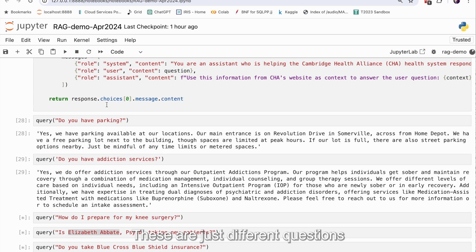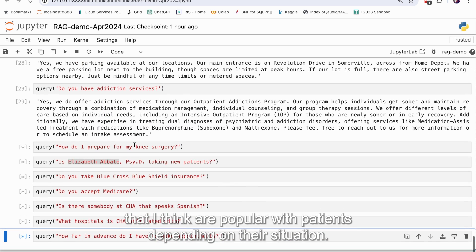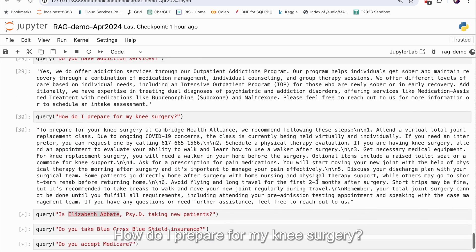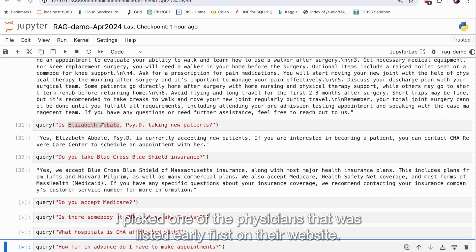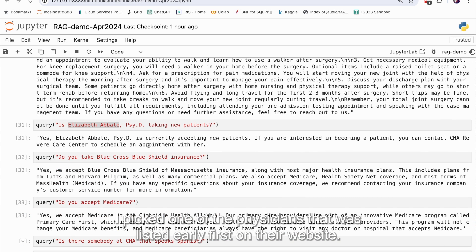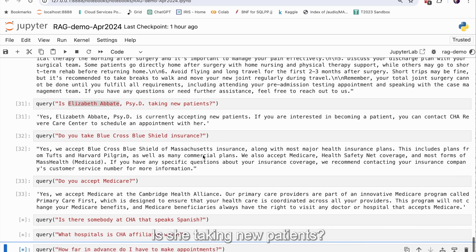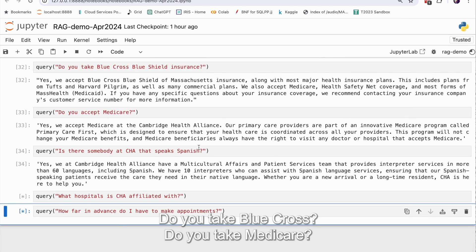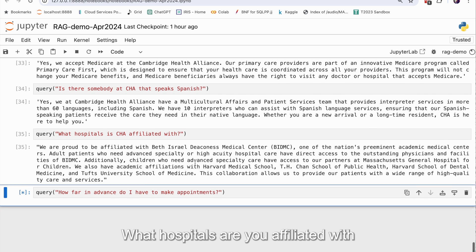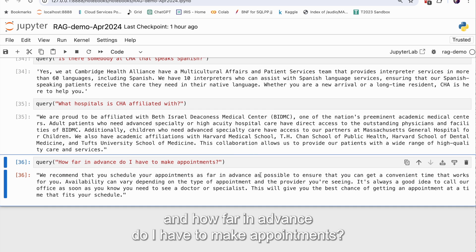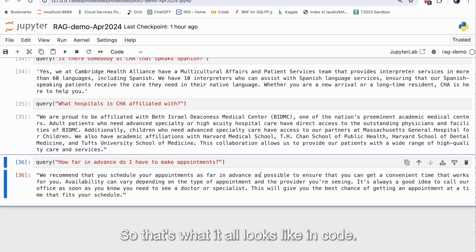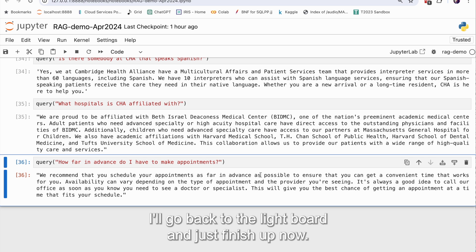These are just different questions that I think are popular with patients depending on their situation. Do you offer addiction services? How do I prepare for my knee surgery? I picked one of the physicians that was listed early, first on their website. Is she taking new patients? Do you take Blue Cross? Do you take Medicare? Is there somebody that speaks Spanish? What hospitals are you affiliated with? And how far in advance do I have to make appointments? So that's what it all looks like in code. I'll go back to the light board and just finish up now.